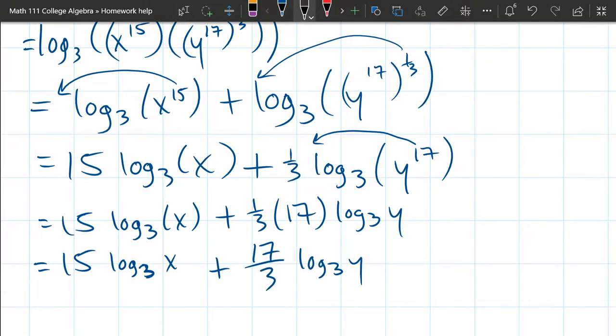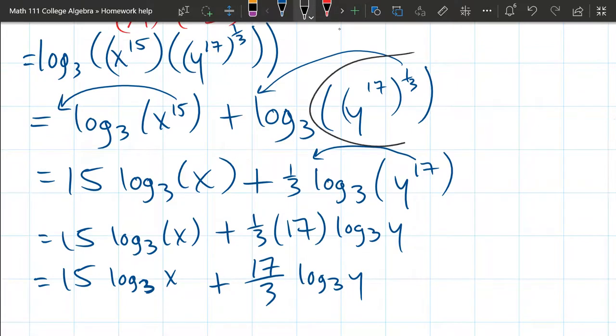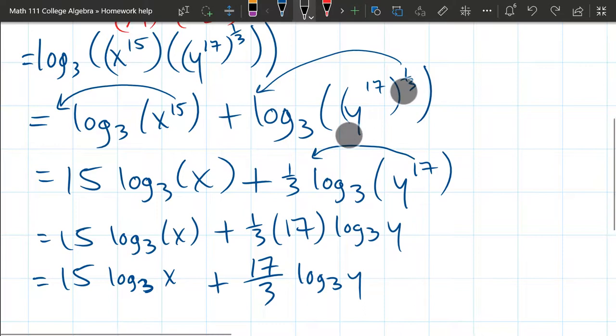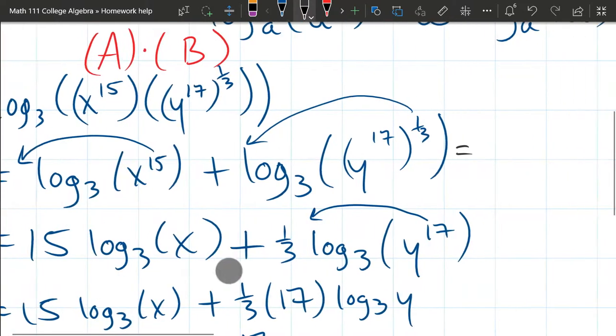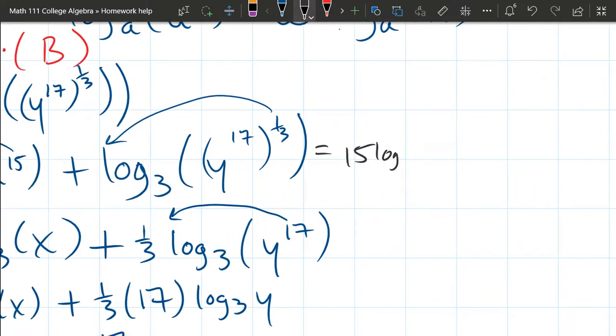All right. If you were paying attention, you should have realized that there was something else I could have done up here instead. And I'm going to go ahead and do that. So this will be an alternative solution. I could have written it, let's see, I'll rewrite the first one as 15 log 3 of X plus what do you do when you have a power of a power? That means you have a product.